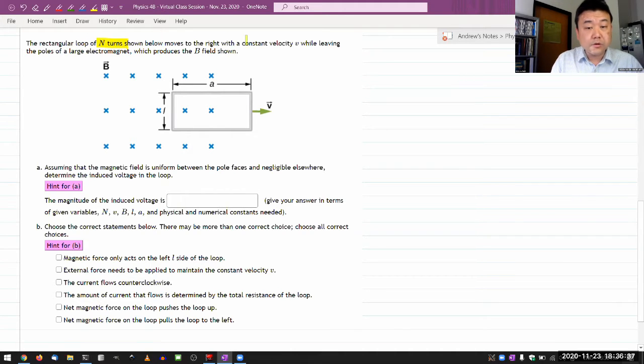The loop moves right with constant velocity v while leaving the poles. We are given the uniform magnetic field up to this region here. And then as the loop leaves the region, the magnetic flux through the loop decreases. Uniform between the pole faces and negligible elsewhere. Determine the induced voltage in the loop. So this is an application of Faraday's law.